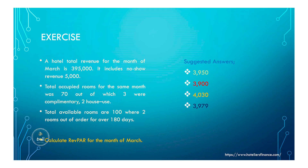Here's the RevPAR exercise: total room revenue is 395,000, with no-show revenue of 5,000. Total occupied rooms for the month were 70, of which three were complementary and two were house use. Total available rooms are 100, with two rooms out of order for 180 days. Calculate RevPAR. Suggested answers are 3,950; 3,900; 4,030; or 3,979. Remember: use total available rooms, not total occupied rooms.